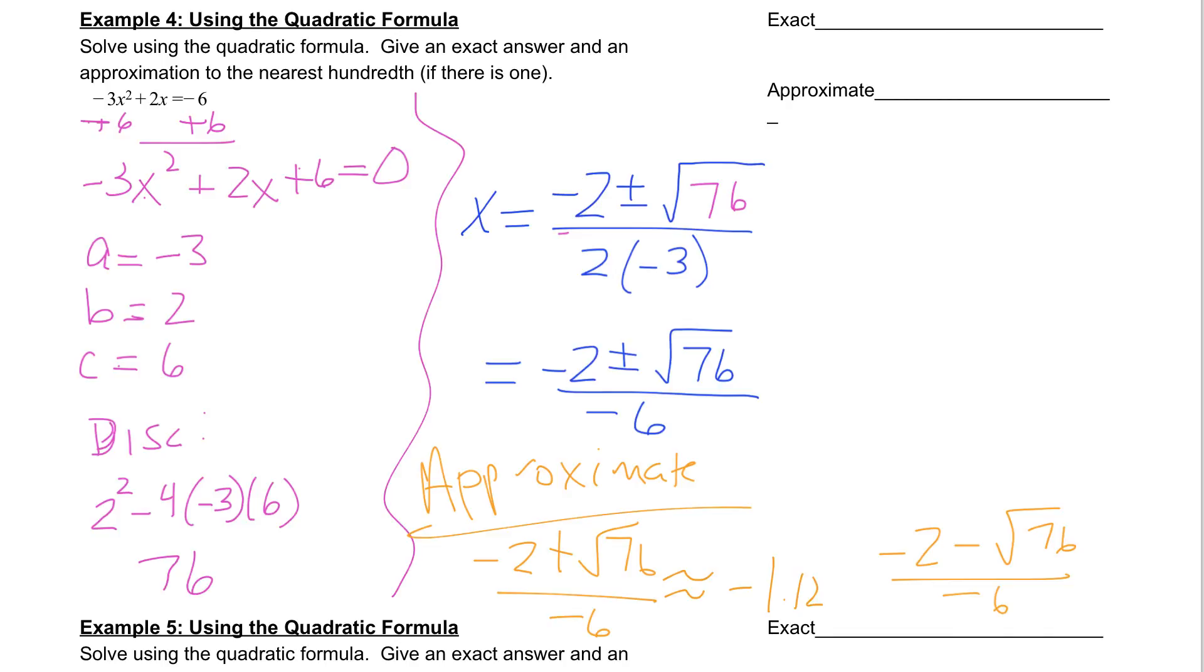If you did the approximation correctly, you should get this to be approximately negative 1.12. And then we're going to try the other one. So now do the negative 2, minus the square root of 76, and divide that by negative 6. And you should get, if you round it correctly, 1.79. Those are our approximate answers. So our approximate answers are negative 1.12 and 1.79.